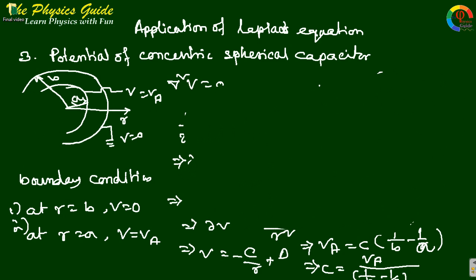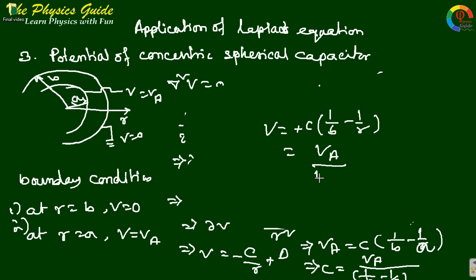Substituting the value of C, the final expression for the potential distribution is: V = [Va / (1/b - 1/a)] × (1/b - 1/r).